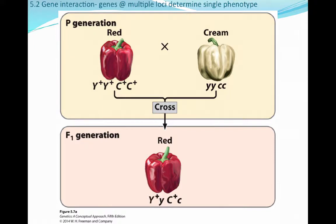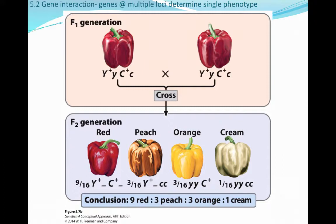If we look at our parent generation and cross a red pepper that is homozygous dominant — Y+ on the first locus and C+ on the second locus — with a cream plant that is homozygous recessive, then all of our F1 generation is going to be heterozygous and red. So 100% of that F1 generation is heterozygous and red. Then if we allow our F1 generation to intercross — breeding a heterozygote to another heterozygote — what happens in the F2 generation is we get four different phenotypes.